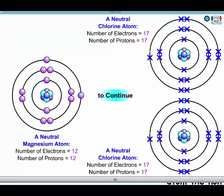Looking at this, we have magnesium and we have chlorine. Magnesium has two valence electrons,